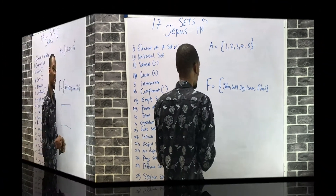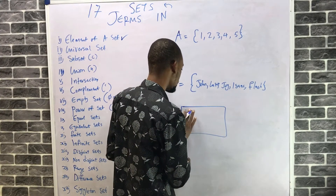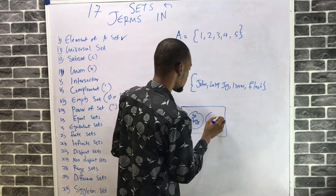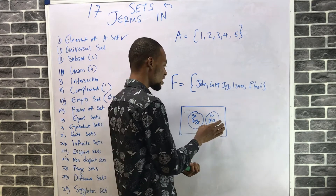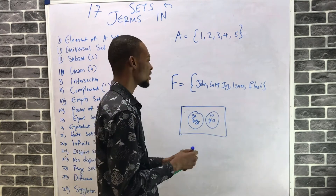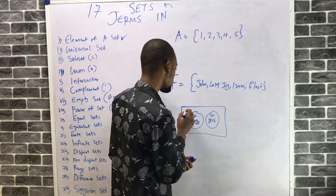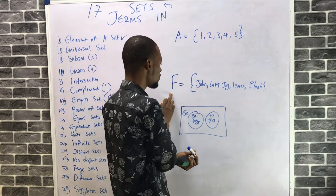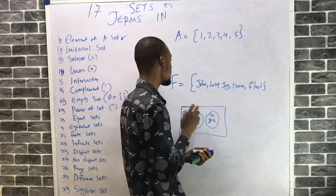Let's look at universal set. Let's say we have 50 boys in a class and 10 girls. Boys are members of the class, girls are members of the class. But the universal set is the total number of people in the class. The class contains boys and girls, so the universal set equals 60 — the total number of people. It encompasses all the sets. That's universal set.